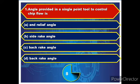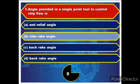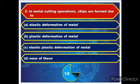Question number one: Angle provided in a single point cutting tool to control chip flow is? Answer: side rake angle. Question number two: In metal cutting operations, chips are formed due to?